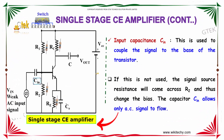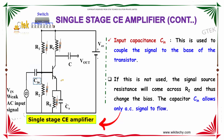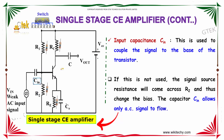Now, we got the input capacitance CIN. This is used to couple the signal to the base of the transistor. If this is not used, the signal source resistance will come across R2 and thus change the bias. The capacitor CIN allows the AC signal to flow.